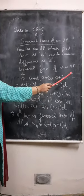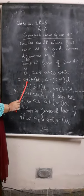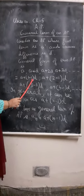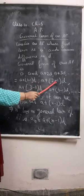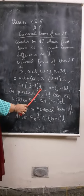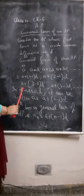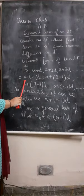A plus 3D and so on. Which can be written as A plus 1 minus 1D, A plus 2 minus 1D, A plus 3 minus 1D, A plus 4 minus 1D and so on. Here A is the first term.